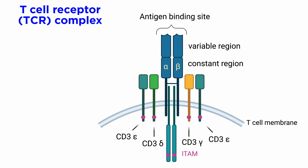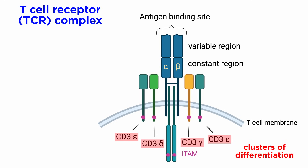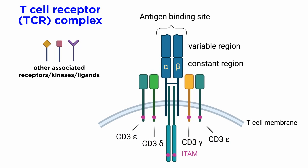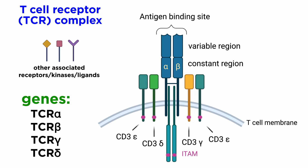The core TCR complex consists of two TCR chains and six clusters of differentiation 3, or CD3 chains. Additionally, several other components such as coreceptors, kinases, and ligands are also associated. The human genome is known to express four TCR genes — TCR alpha, TCR beta, TCR gamma, and TCR delta — which form two distinct heterodimers: either TCR alpha/TCR beta, or TCR gamma/TCR delta.